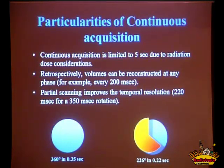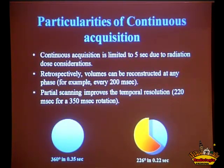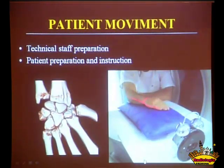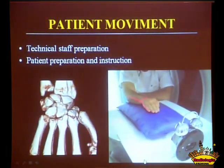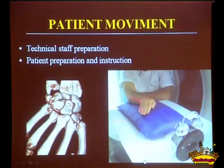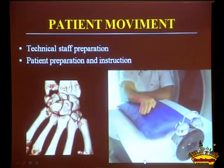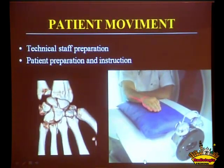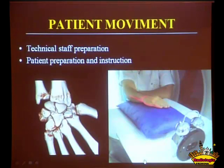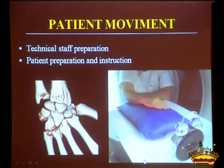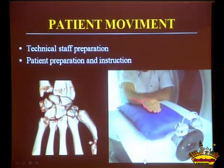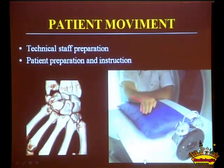If you couple that with partial scanning, in which a volume can be acquired in half of 360 degrees of rotation, that really boosts up the temporal resolution. We prepare the patients to perform a homogeneous and slow motion. The motion is timed, and we coordinate our scanning with the patient motion.